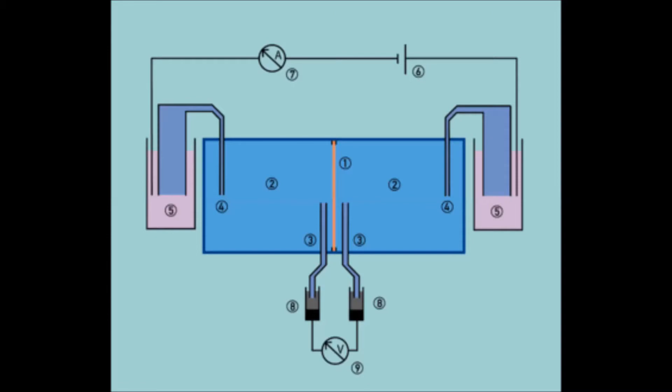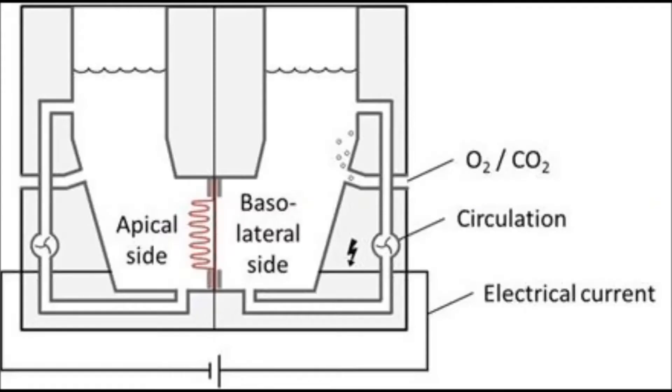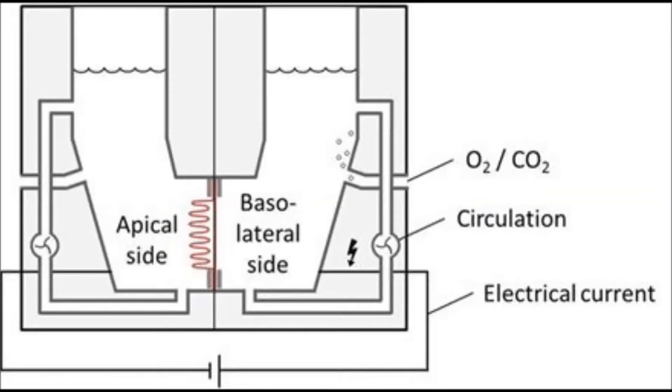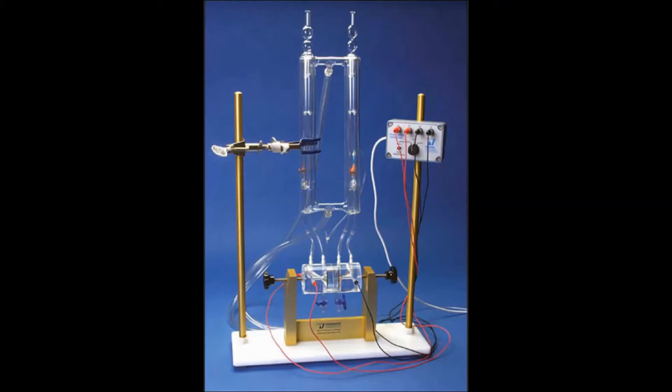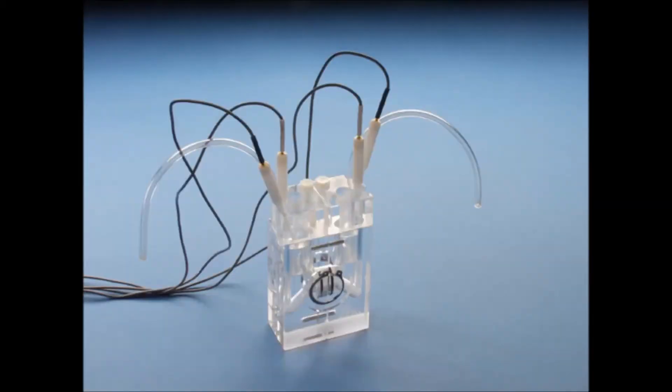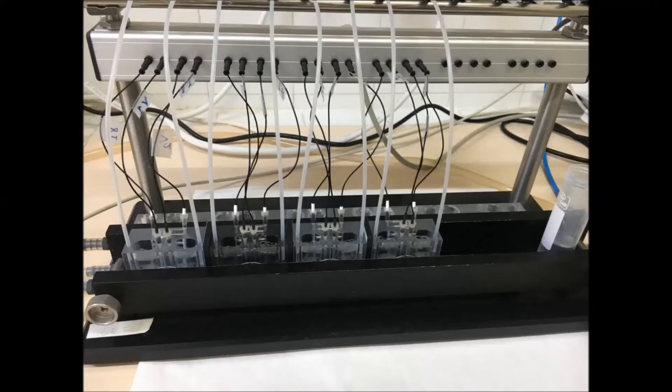Ussing chamber is a system for measuring epithelial membrane permeability across epithelial membranes and electrophysiological parameters, essentially epithelial membrane resistance to assess tissue integrity, and short-circuit current is an indicator of net ion transport taking place across the epithelium.